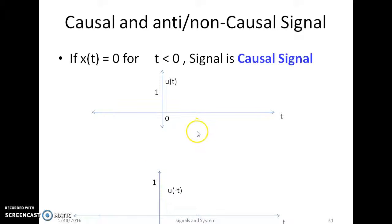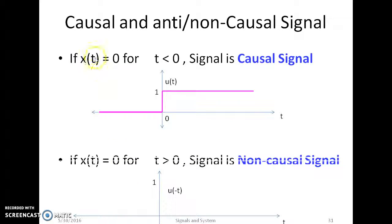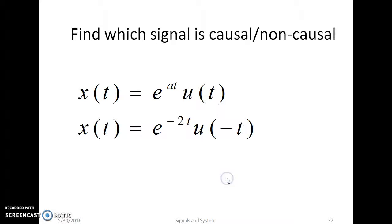The last category is causal and non-causal. A signal is causal when x(t) = 0 for t < 0, meaning the signal is present only on the right-hand side of the origin. If x(t) ≠ 0 for t < 0, the signal is non-causal. The causal and non-causal conditions of given signals will be examined in class.